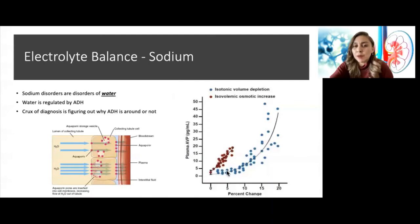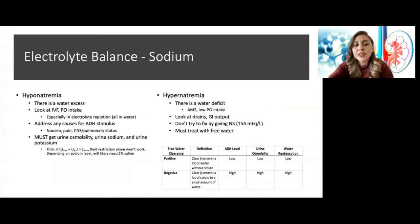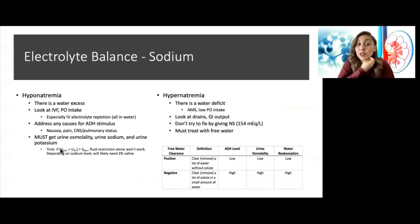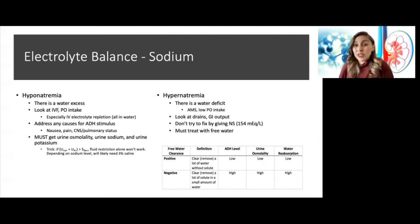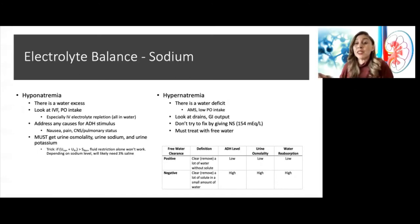It's really important to think of dysnatremia — hypo- or hypernatremia — as a problem of water. Hyponatremia means water excess; hypernatremia means water deficit. For water excess, look at IV fluids and PO intake. Rule out psychogenic polydipsia or water intoxication — drinking so much water that we overwhelm the kidney's ability to excrete it. Then address any cause why ADH could be elevated. Look at the patient's volume status and what was their access to water.